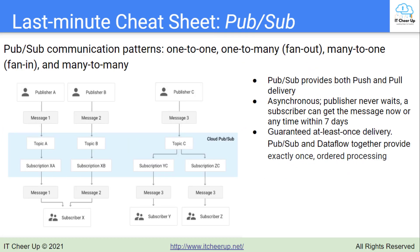The communication between publisher and subscriber can be one-to-one, one-to-many, many-to-one, and many-to-many relationships. PubSub provides both push and pull delivery. PubSub simplifies event distribution by replacing synchronous point-to-point connections with a single high-availability asynchronous bus. So the publisher never waits — a subscriber can get the message now or anytime within 7 days.